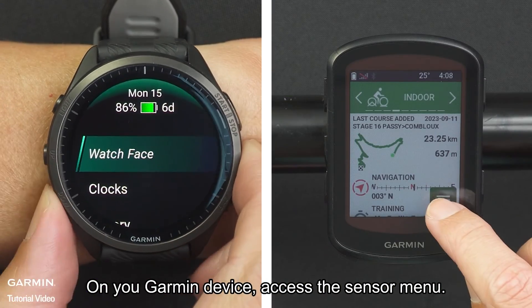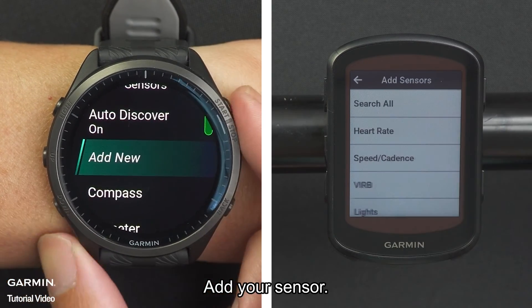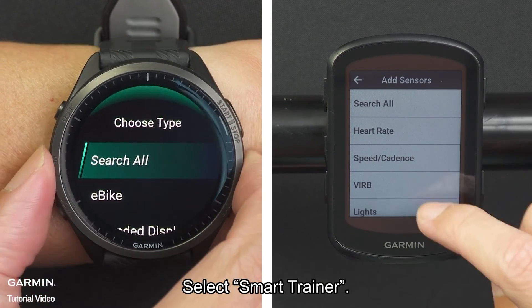On your Garmin device, access the Sensor menu, add your sensor, and select Smart Trainer.